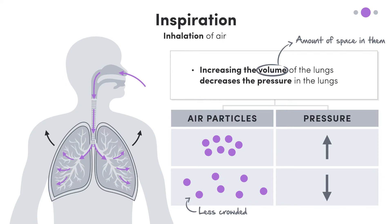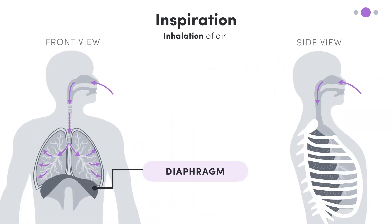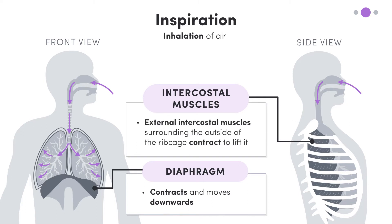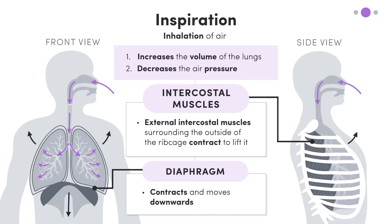So how do we increase the volume of the lungs? There are two key players here: the diaphragm and the intercostal muscles. The diaphragm contracts and moves downwards, and the external intercostal muscles surrounding the outside of our rib cage contract to lift it. These actions increase the volume of the lungs, decreasing the pressure so that air moves from the atmosphere into the lungs.